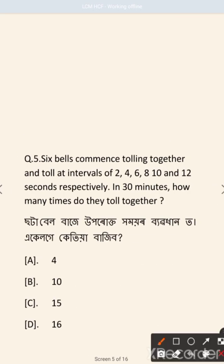Next question: 6 bells are tolling together and toll at intervals of 2, 4, 6, 8, 10, and 12 seconds respectively. In 30 minutes, how many times do they toll together?